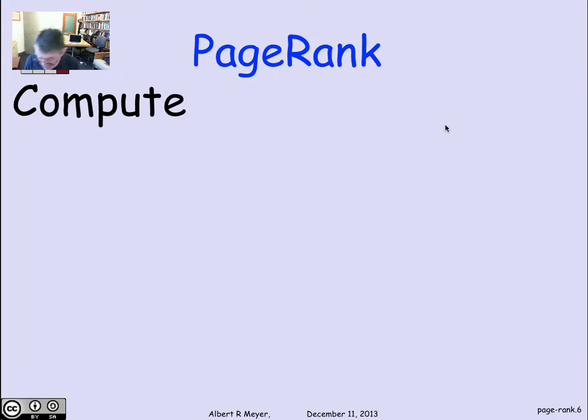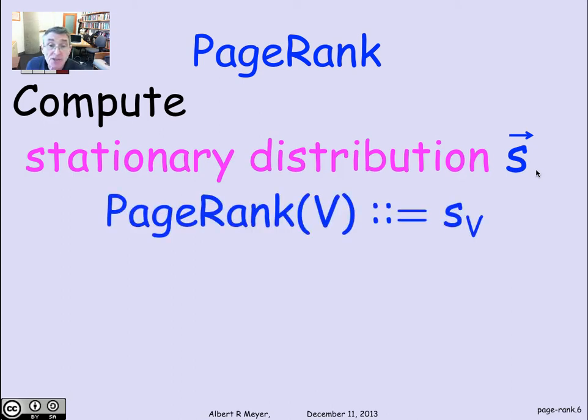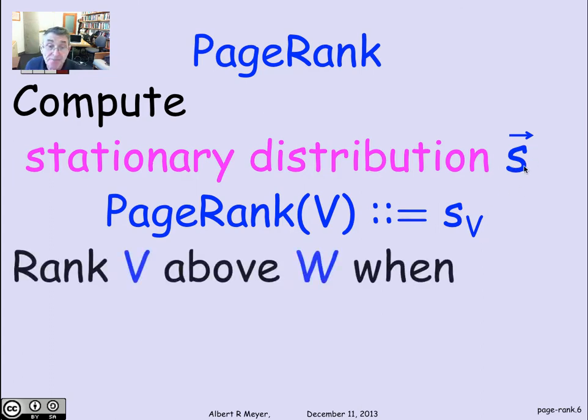PageRank is obtained by computing a stationary distribution for the World Wide Web. S bar is a vector of length trillions. The coordinates are indexed by the web pages, and we want to calculate the stable distribution. We'll simply define the PageRank of a page as its probability of being there in the stationary distribution, the V component of the stationary distribution S. And of course, we'll rank V above W when the probability of being in V is higher than the probability of being in W.